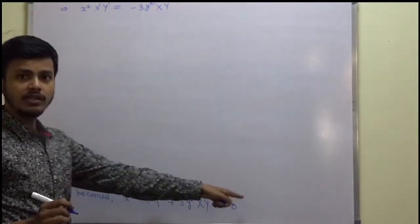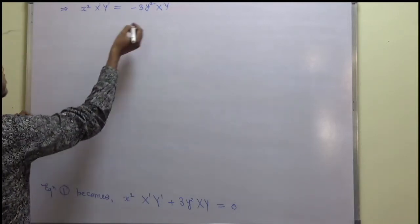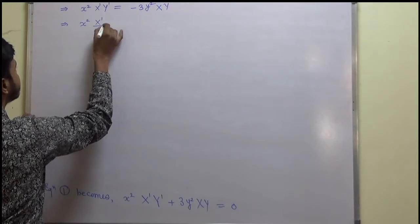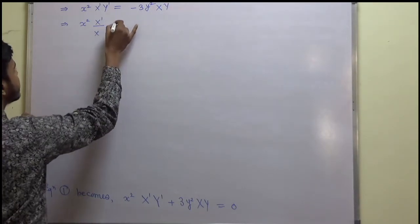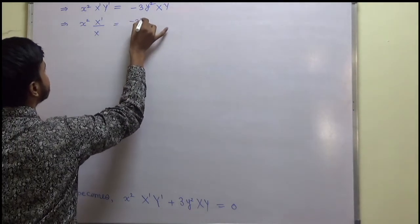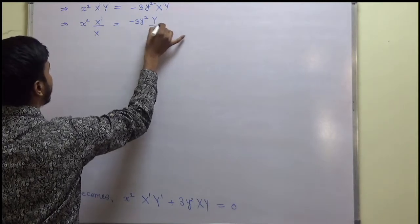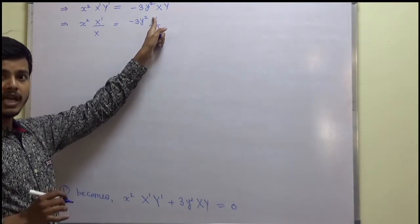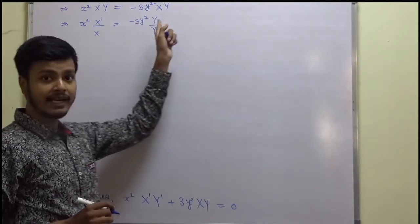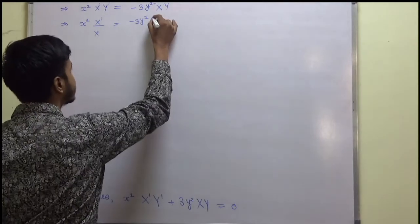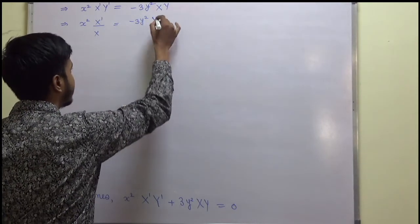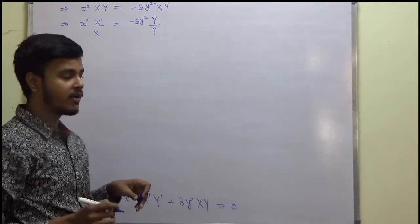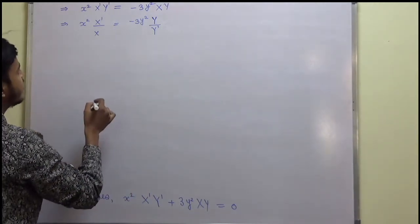Taking terms of X on one side and terms of Y on the other side, we get: X'/X = -3y² · Y / Y'. Note the notation carefully — small y is the independent variable, capital Y is the function of y, and capital X is the function of x.